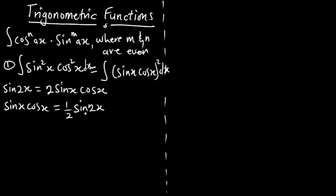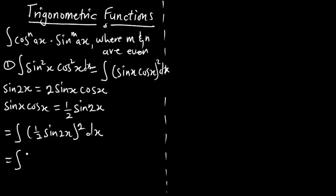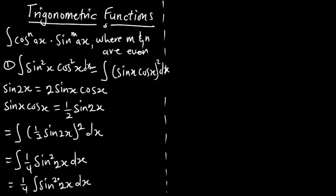So we can bring this identity in to replace sinx·cosx. Therefore, the integral becomes the integral of (½·sin2x)² dx. Squaring gives us the integral of ¼·sin²2x dx.